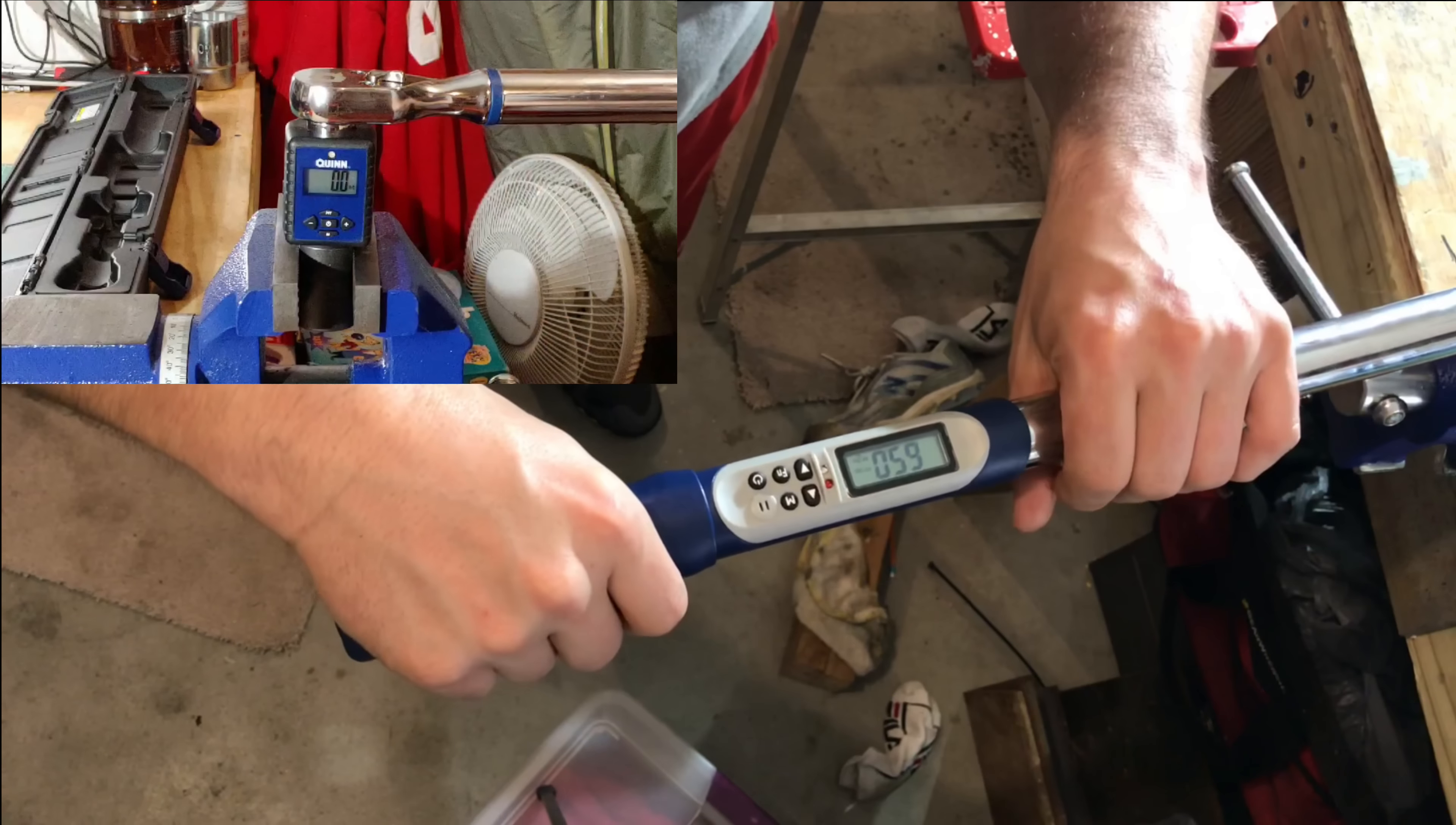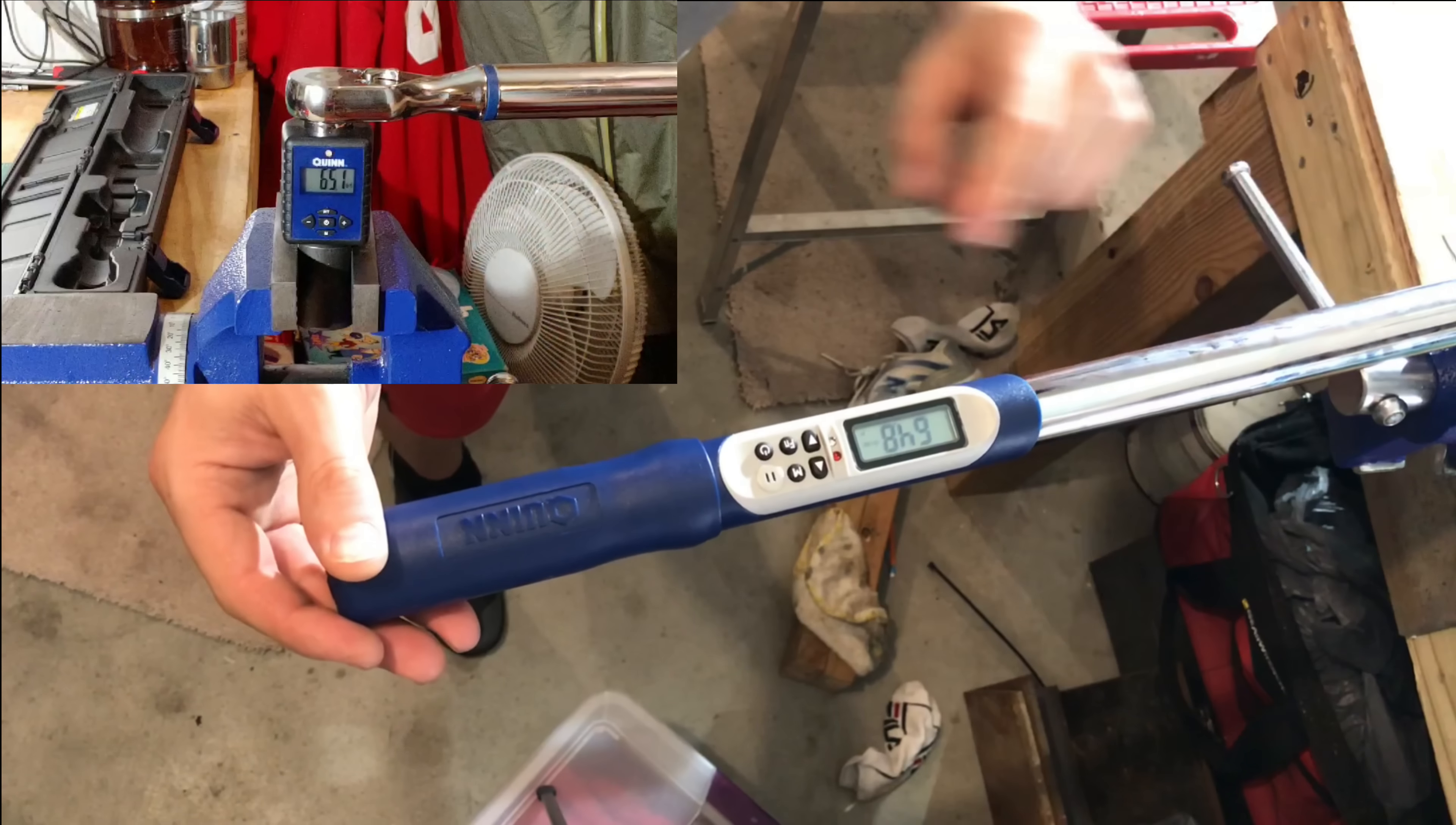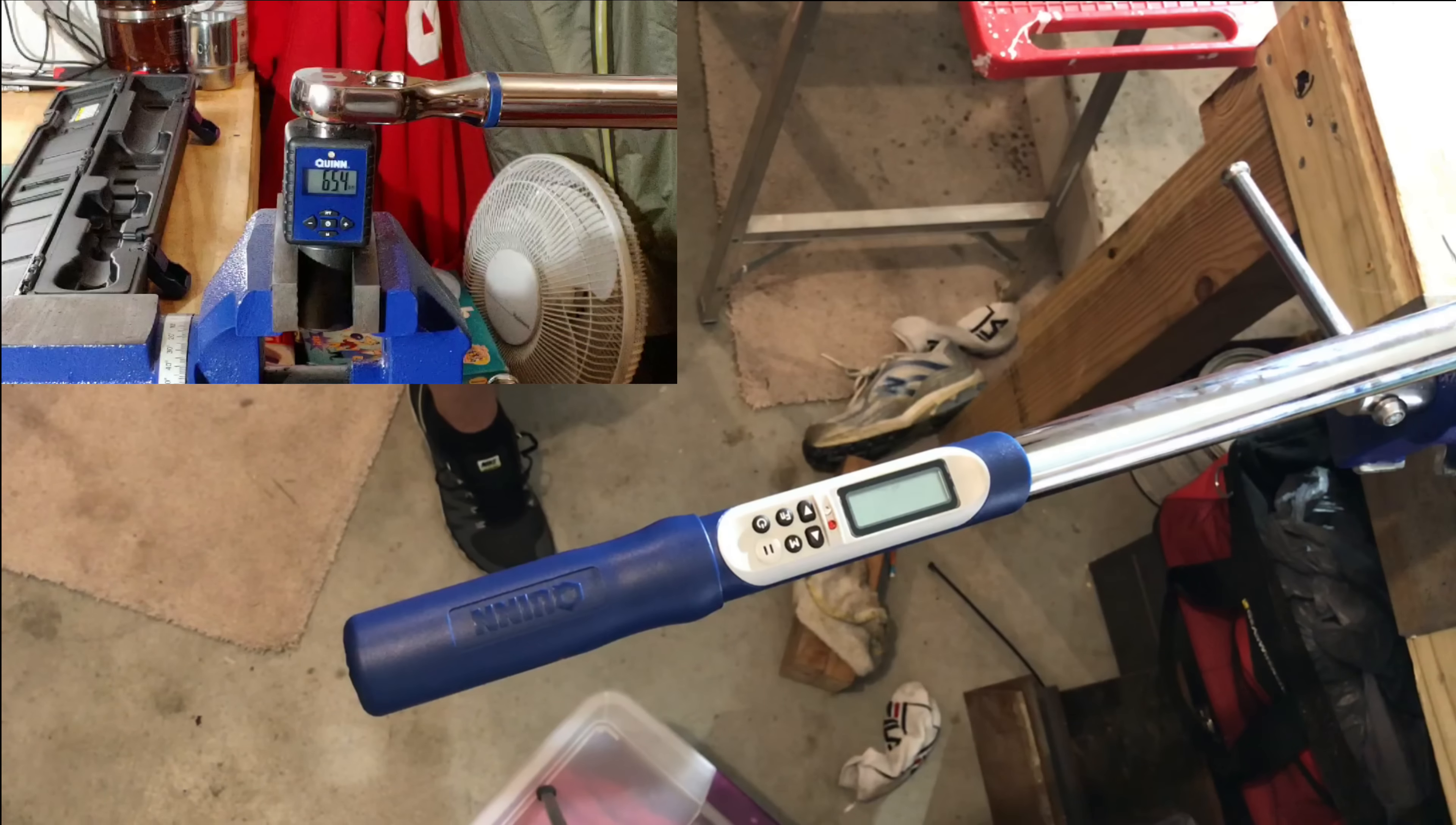We're setting it at 65 foot-pounds. We got our torque wrench here set for 65 foot-pounds. So we'll go ahead and see how this pulls. Results: 65.6, 65.7, 64.8, 65.1, 65.2, 65.4. Those are some really tight tolerances so far from what I'm seeing. While the manufacturer stresses two to three percent margin of error these things are falling really tight and measuring very accurate.